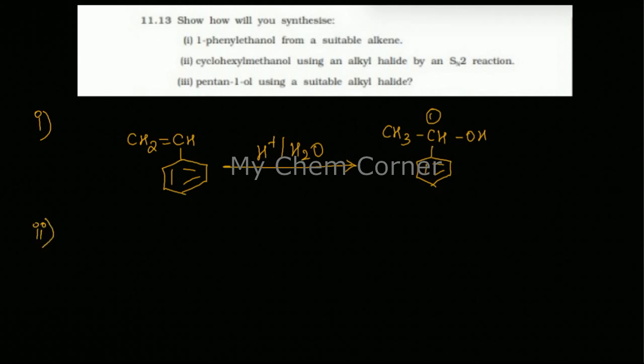Now second one is cyclohexyl methanol using an alkyl halide by an SN2 mechanism. SN2 mechanism here clearly tells us that we are not going to have any tertiary alkyl halide, instead we are going to have a primary or a secondary one. So let us draw the product given here. It says cyclohexyl methanol.